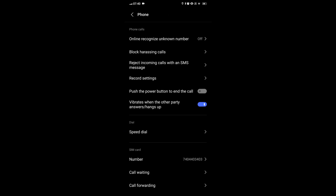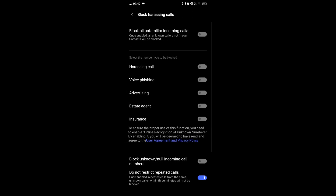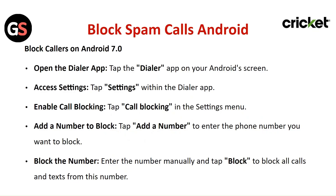Access the settings by tapping on Settings within the dialer app. Enable call blocking by tapping 'Call Blocking' in the settings menu, then tap 'Add a New Number' to enter the phone number you want to block.